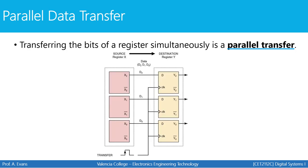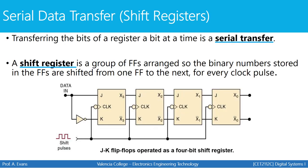When we transfer bits in groups simultaneously, that's called a parallel transfer. For example, with three D flip-flops on the left and three on the right, a single clock signal can take the output from each one and transfer it to the next flip-flop simultaneously. When we transfer bits one at a time, that's called a serial transfer. A shift register is a group of flip-flops arranged so that the binary numbers stored are shifted from one flip-flop to the next with each clock pulse.